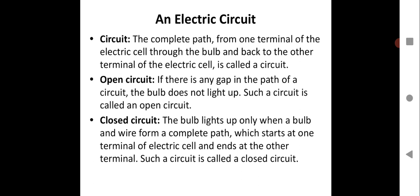Now let us learn about an electric circuit. The complete path from one terminal of the electric cell through the bulb and back to the other terminal of the electric cell is called a circuit. Electric current flows from one terminal of the cell through the bulb — if the bulb is glowing, that is the indication that current is flowing — and back to the other terminal. A cell has a positive and a negative terminal. The current passes through the bulb, the bulb glows, and then the electric current goes to the other terminal. This is called a circuit.